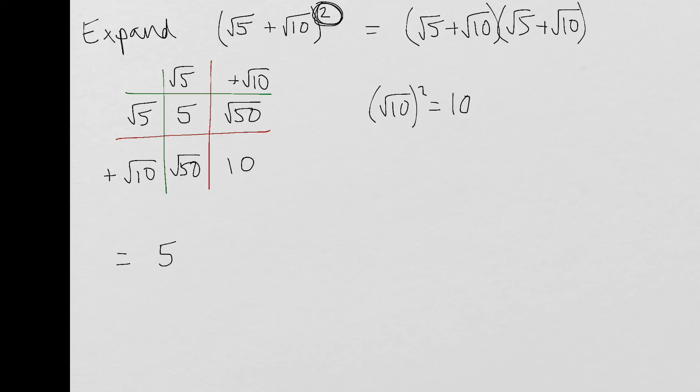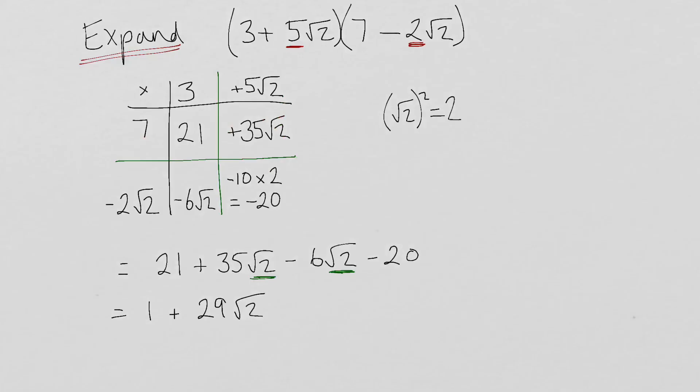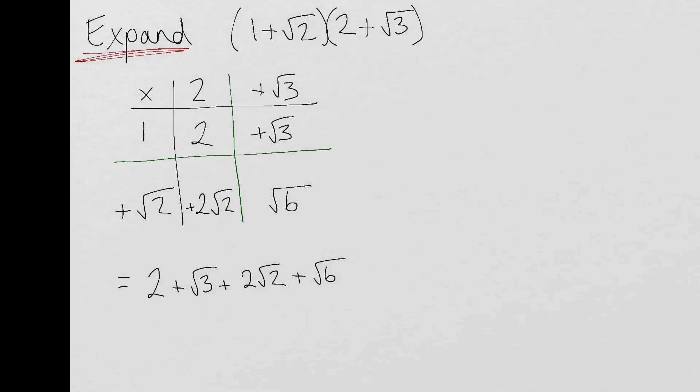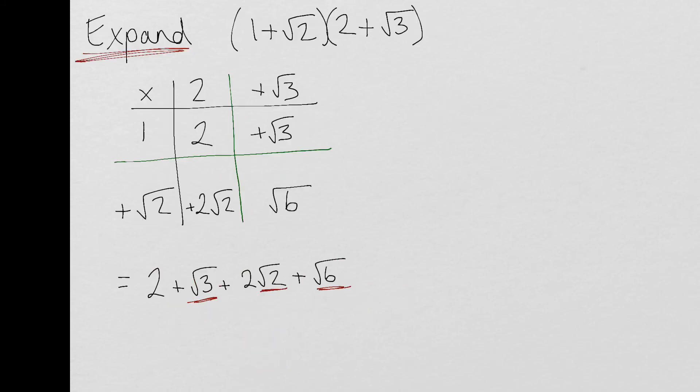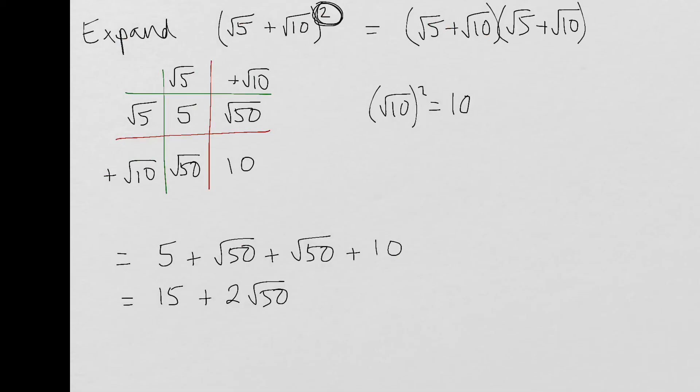So let's have a look. I've got 5 plus the square root of 50 plus the square root of 50 plus 10 which is 15 plus 2 lots of √50. Now I would actually lose a mark here if I left that as my final answer. In previous examples, the final answer has included a √2, a √2, a √6 and a √3 and then a √2. It's been quite obvious that those surds can't be simplified any further.